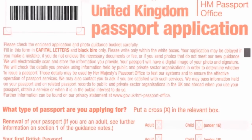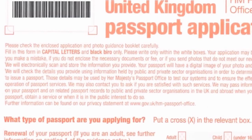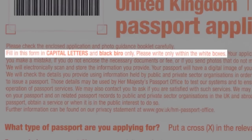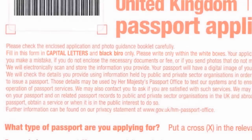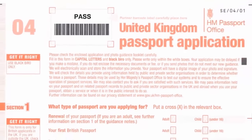First of all, make sure you have a black ink pen. You must fill in the form in capital letters and stay within the white boxes. Minor mistakes can be crossed out, but correction fluid is not permitted. For bigger mistakes, we would advise you to complete a new form.